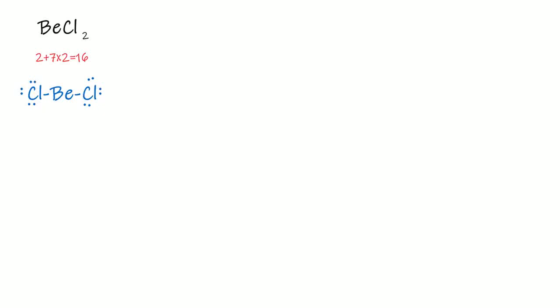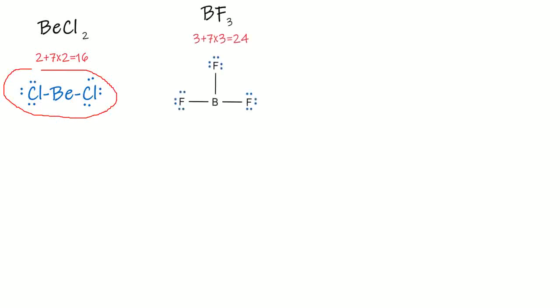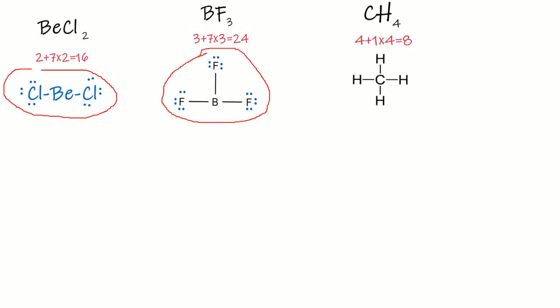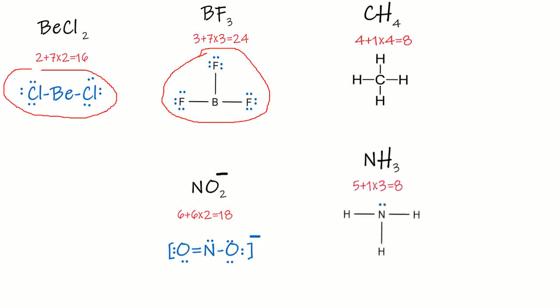Now, when we draw the Lewis structure for BeCl₂, the Lewis structure of BeCl₂ is here. And similarly for BF₃, we can draw the Lewis structure by using the 5 steps explained in my previous video. We can also draw Lewis structures for methane, for the nitrite ion, and similarly for ammonia and water molecules.